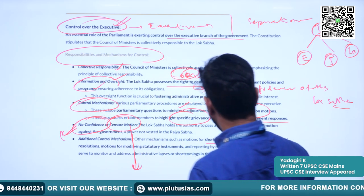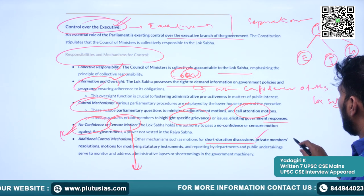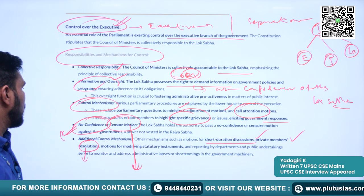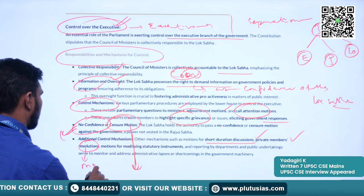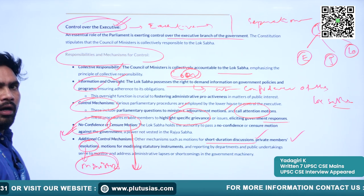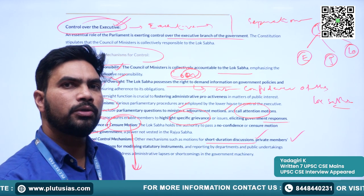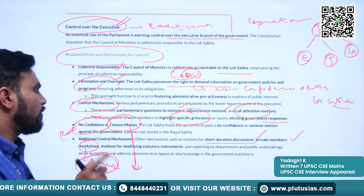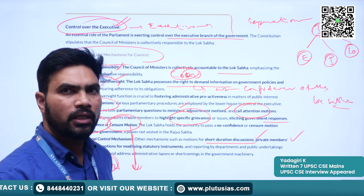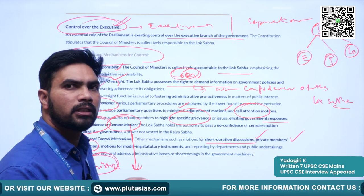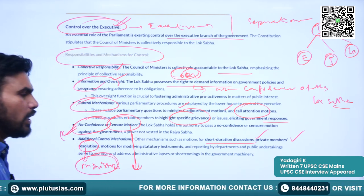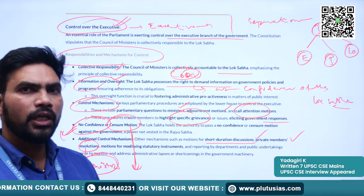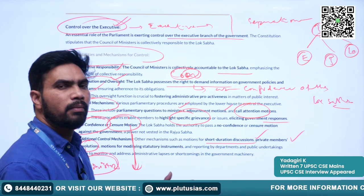Additional mechanisms include short duration discussions and private members' bills. Private members are members apart from the ministers. When a minister introduces a bill or resolution, that becomes a public bill or resolution. When any other member apart from a minister introduces a bill or resolution, it is called a private member's bill or private member's resolution. Whenever a private member is not happy with the government's action, he can move a resolution — that is called a private member's resolution.